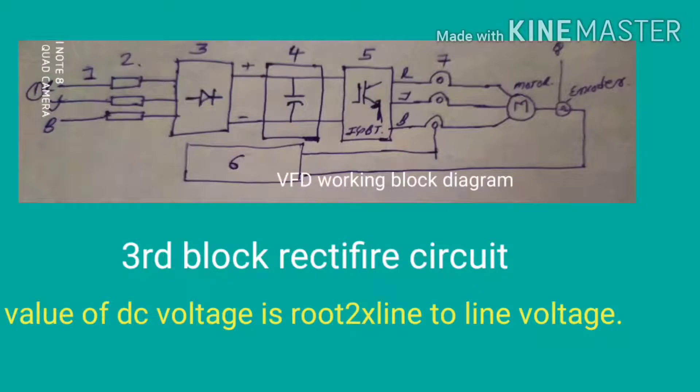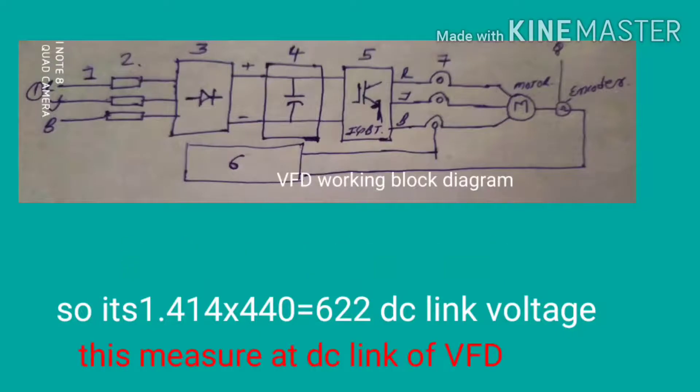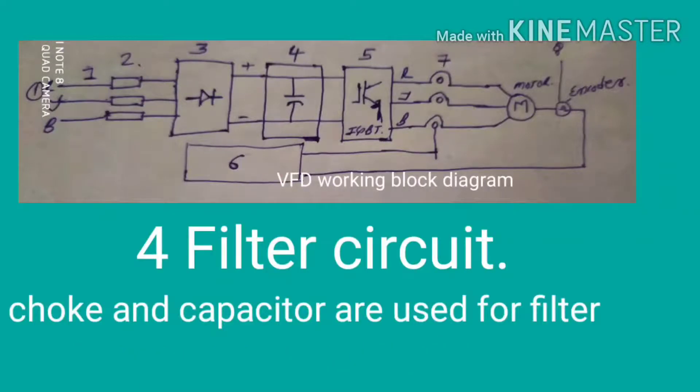The value of this DC voltage is root 2 into line to line voltage, so it's 1.414 into 440 equals 622 DC link voltage. This DC link voltage is also available on the VFD and we can measure this DC link on the VFD.